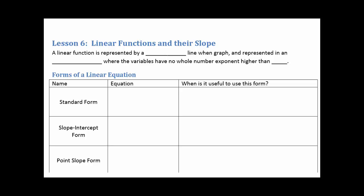Lesson 6, we're going to talk about linear functions and their slope. A linear function is represented by a straight line when graphed and represents an equation where the variables have no number exponent higher than 1.